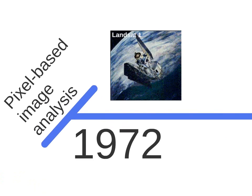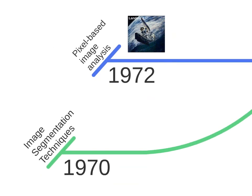I would like to remember some of the history of remote sensing image analysis. In 1972, with the launch of Landsat 1, we can say this is the start of pixel-based image analysis in remote sensing. With the launch of the satellite, researchers could start to analyze pixel values and make inferences. However, image segmentation techniques also started to appear, though they were applied in other kinds of images, not remote sensing. The segmentation techniques are older than remote sensing image analysis, and these two areas were independent.